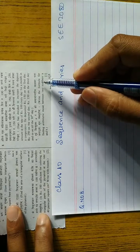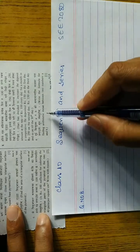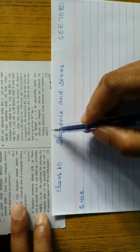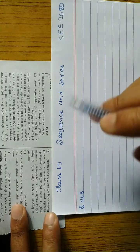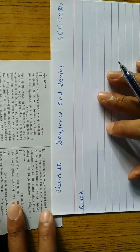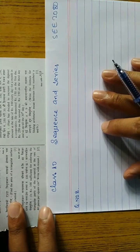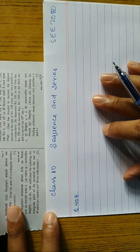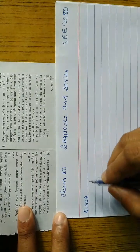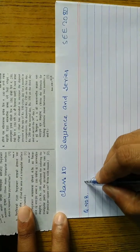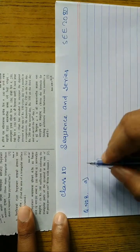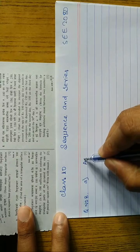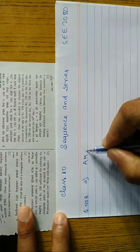Question part A: write the formula for finding the arithmetic mean between two numbers a and b. So here we have to write down the formula of arithmetic mean between two numbers.